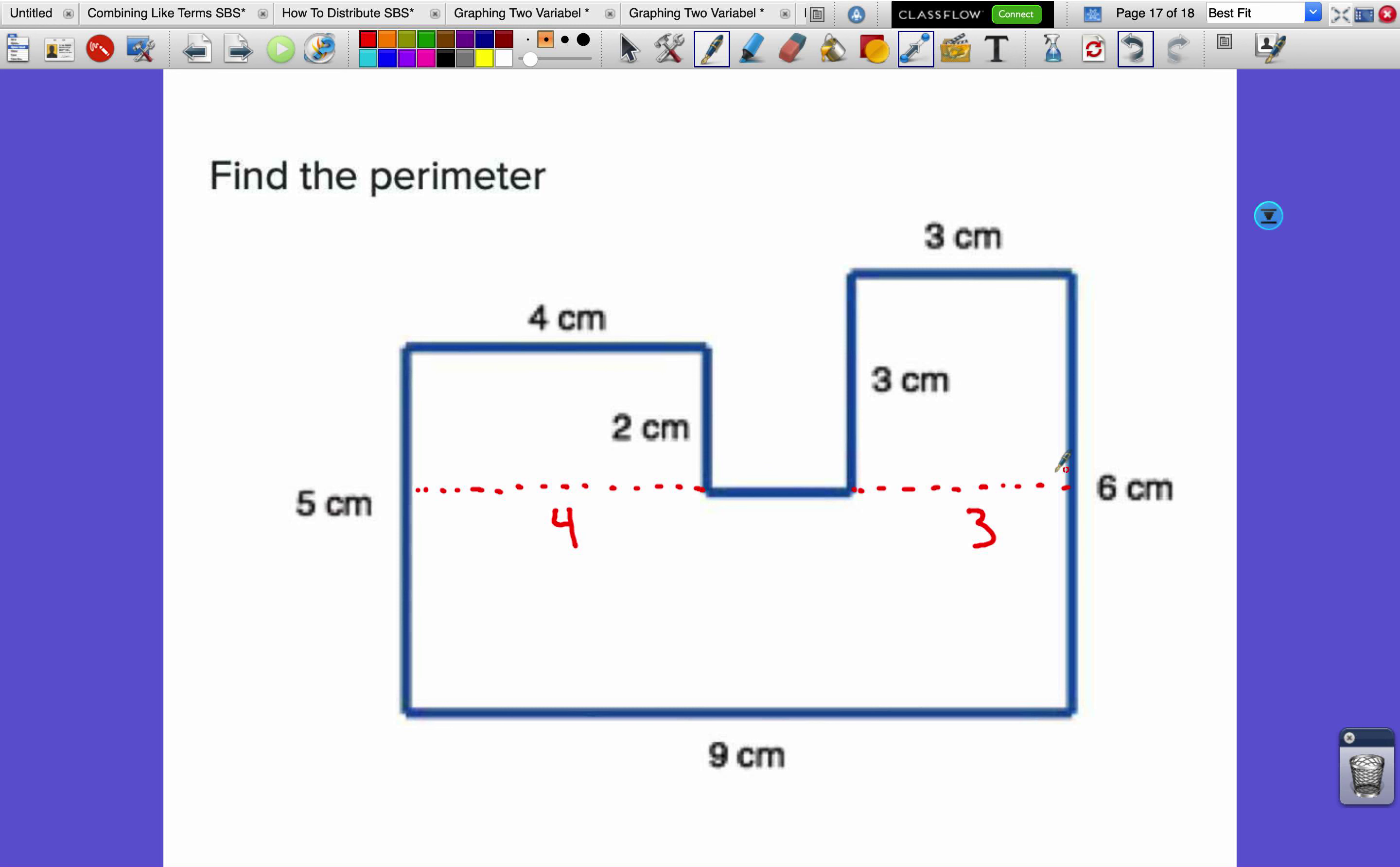These are smaller rectangles - we know that this is 3 across there and this is 4 across here. The whole thing has to be 9. It's already 7, so this has to be 2 right here. Now we can just add them all up: 5 + 4 + 2 + 2 + 3 + 3 + 6 + 9, and I'm back around to the 5.